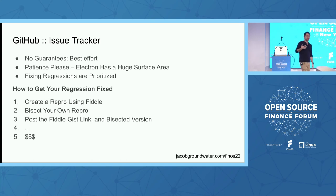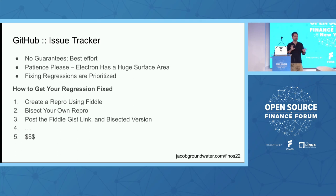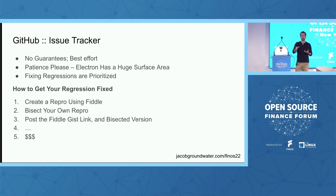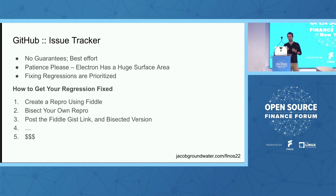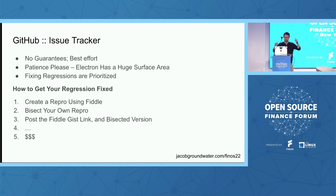The issue tracker is a best-effort environment. If you're submitting a bug or request, we see it, but patience is appreciated. Between upgrade duties and fixing bisected regressions, we might run out of time. The issue tracker isn't treated like a Zendesk — it's where we record things. There are no guarantees, but if you can do a bisected regression, you'll be my best friend.